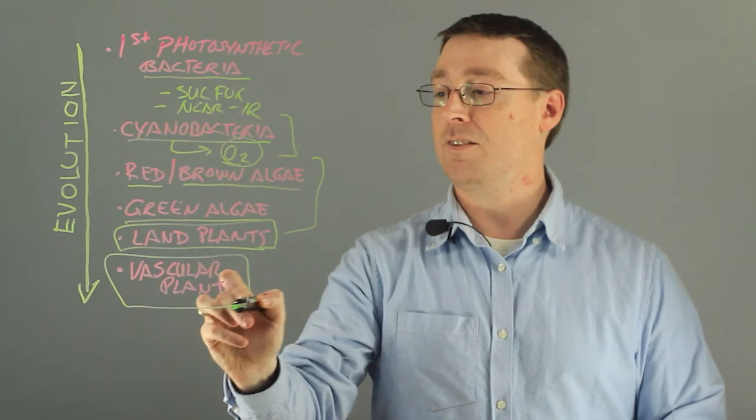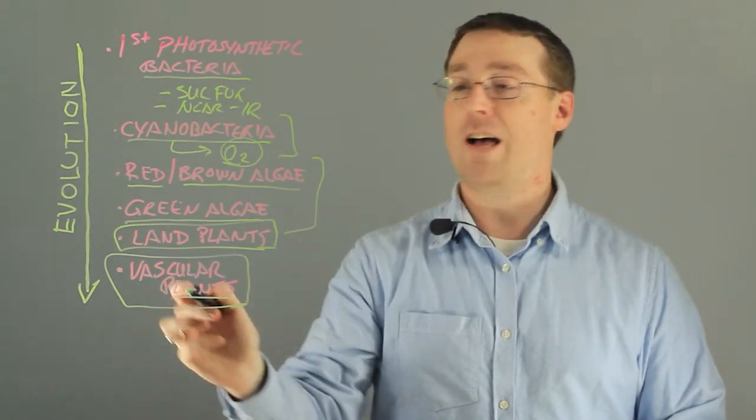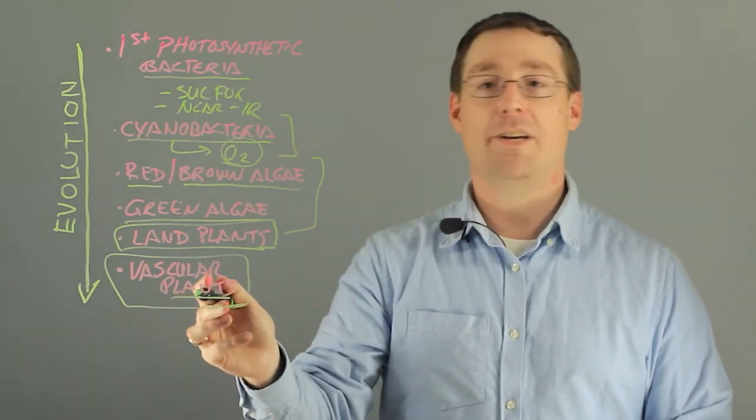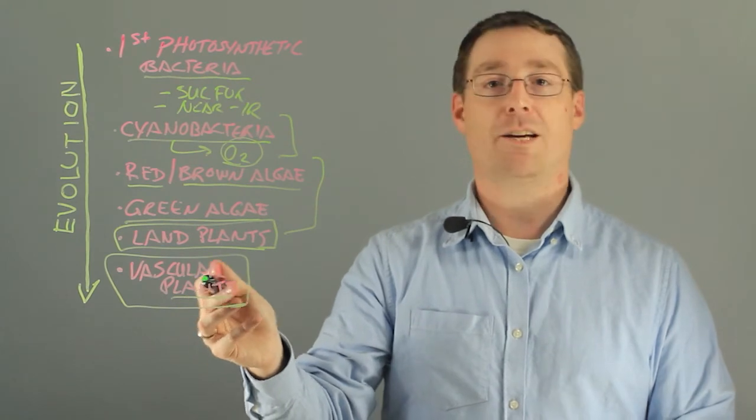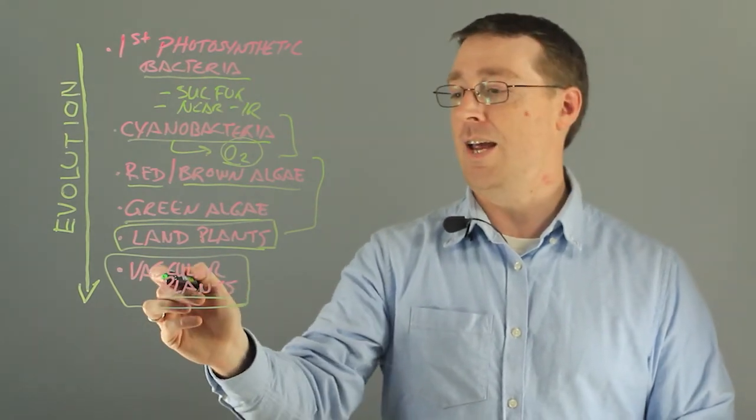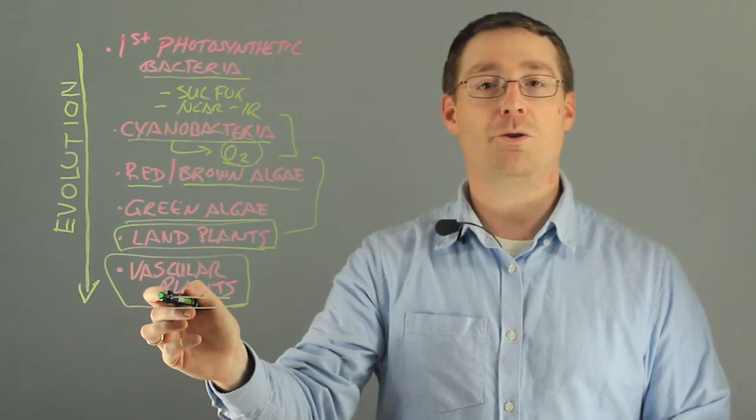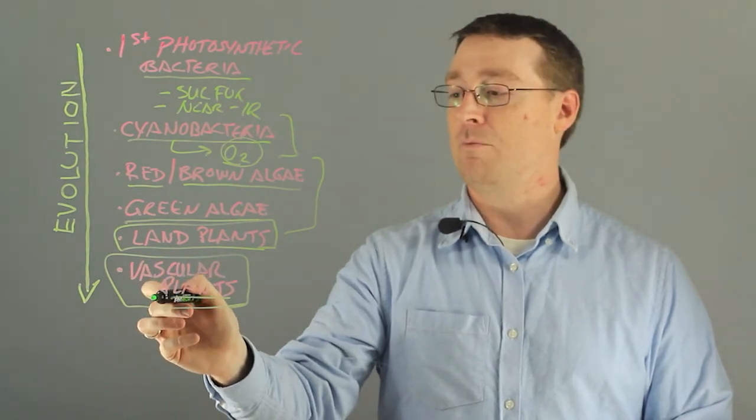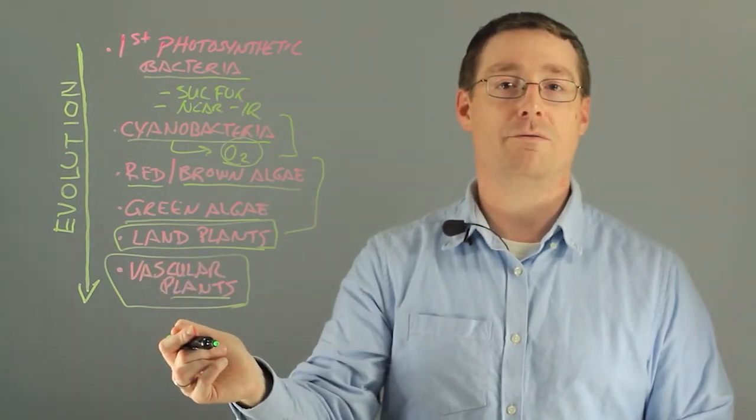And finally, the most advanced and what we have currently are vascular plants, which are ones that have a very deep root system. They can draw water from the earth and convert CO2 into oxygen as we conventionally describe it in biology.